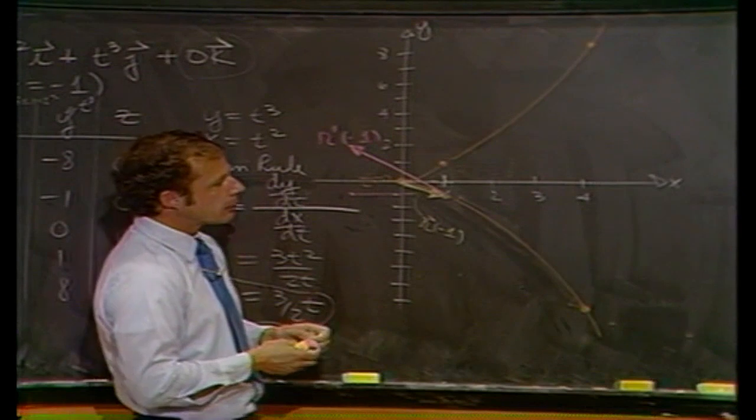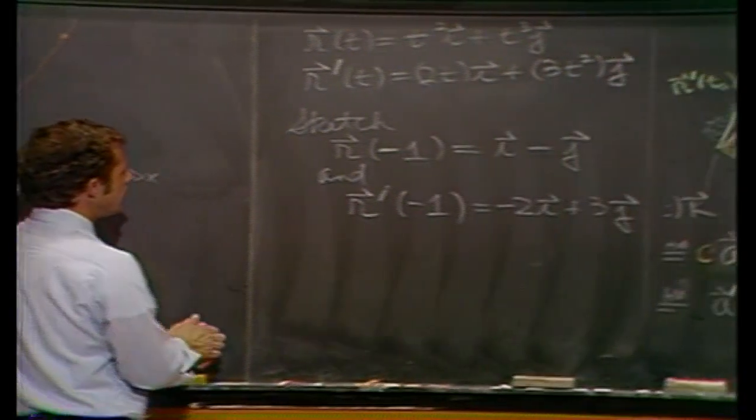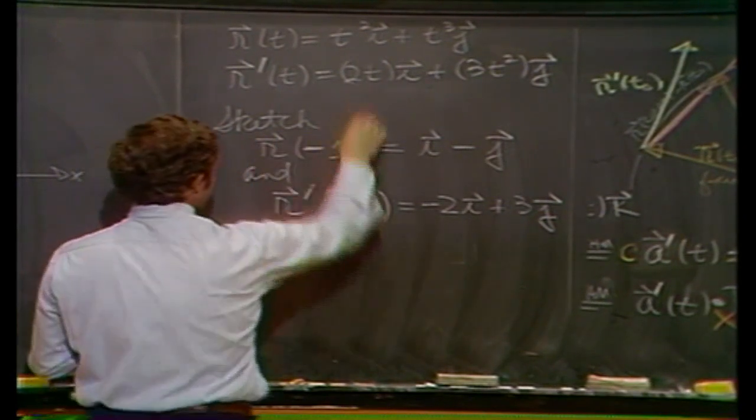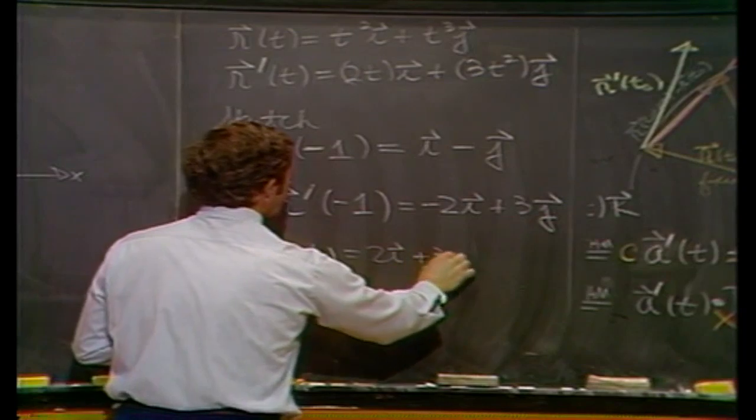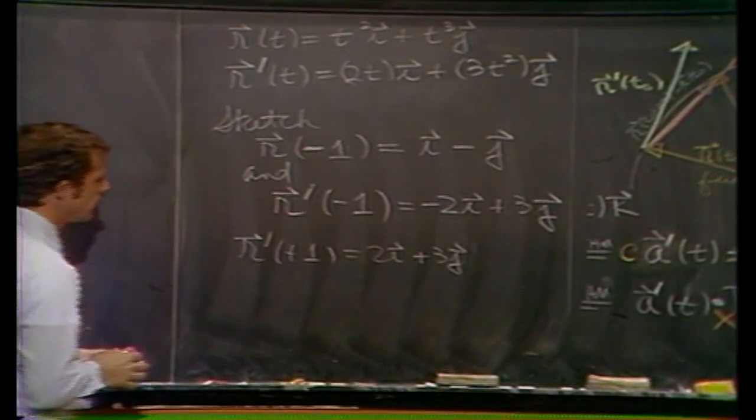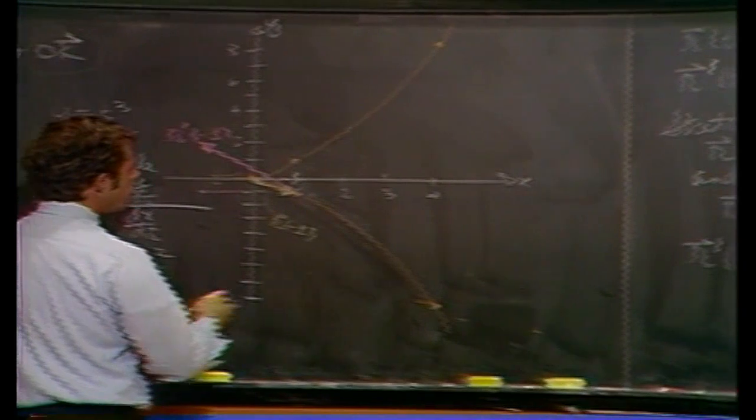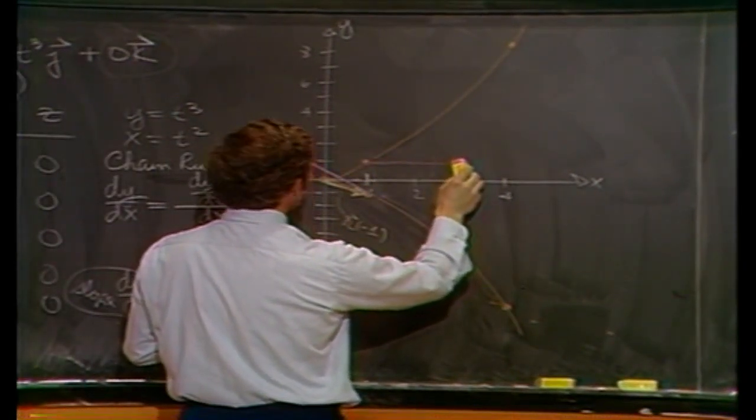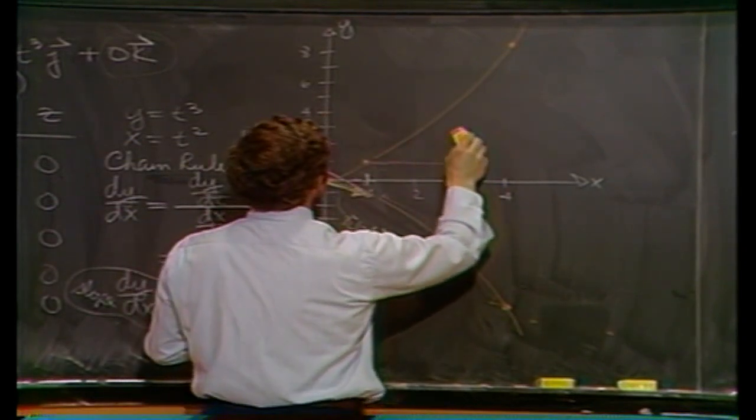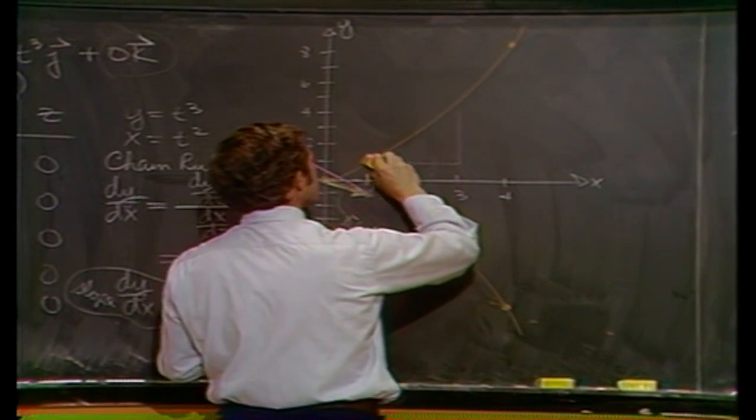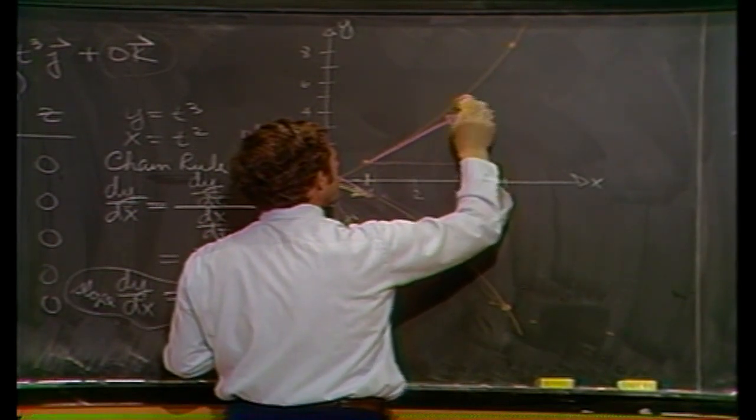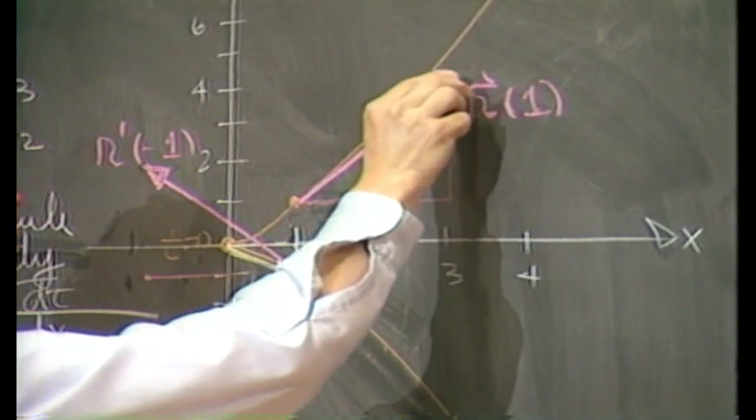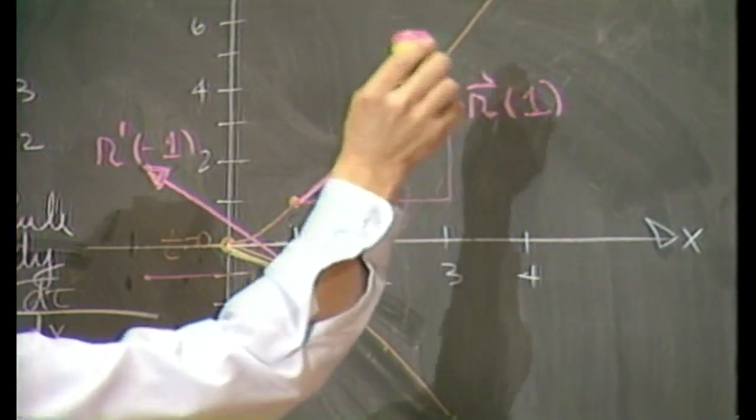So at any instant, we know exactly how fast things are going on. If you took r prime at plus one, let's sketch that in too. What you're going to get is two i plus three j. So at plus one, the figure changes. We go two units in the positive x direction up three in the y direction. And it looks like one more time, we do have something that looks fairly tangential. So there's r prime at plus one.